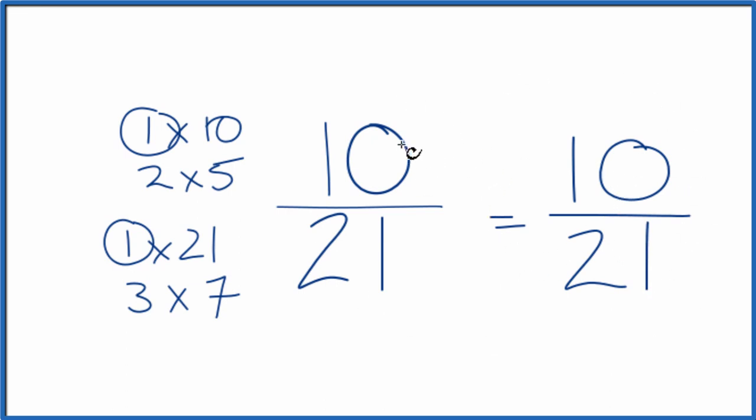What that means is the fraction 10 21sts is already simplified. You can't reduce this any further. This is Dr. B. Thanks for watching.